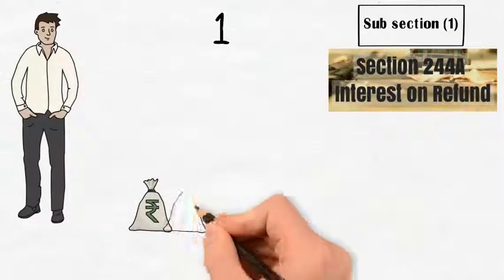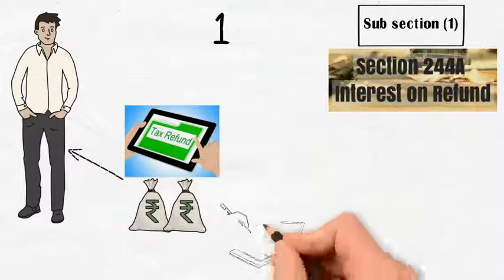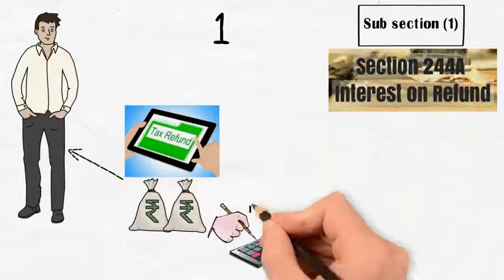First, under subsection 1 of section 244A, an assessee is made entitled to receive an addition to any amount of refund that has become due to him, simple interest calculated in the manner provided therein.